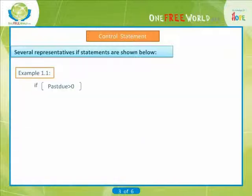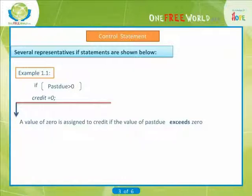If (pastdue > 0) credit = 0. In the second statement, a value of zero is assigned to credit if the value of pastdue exceeds zero.